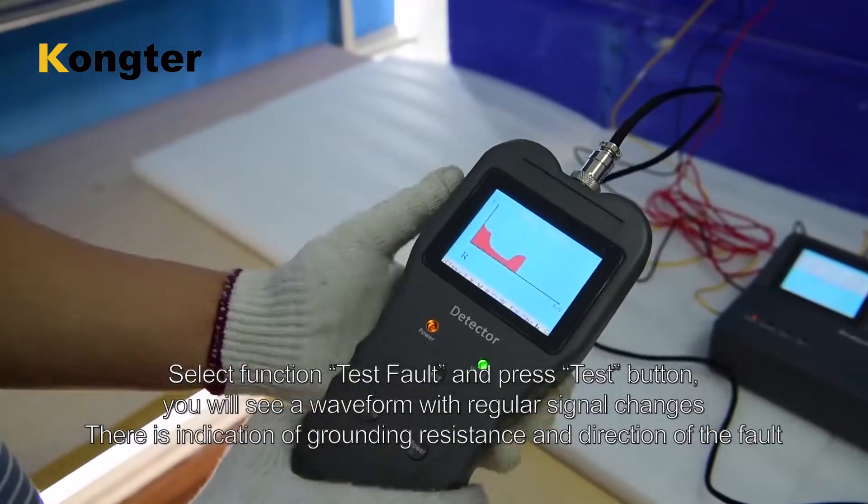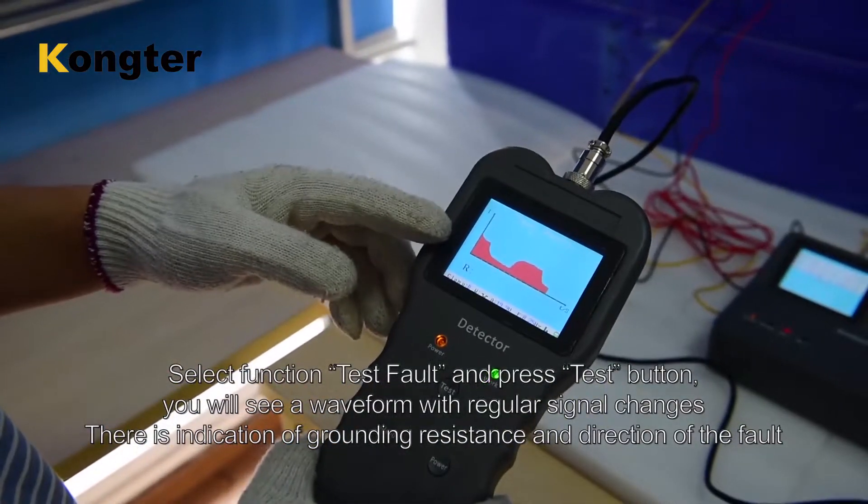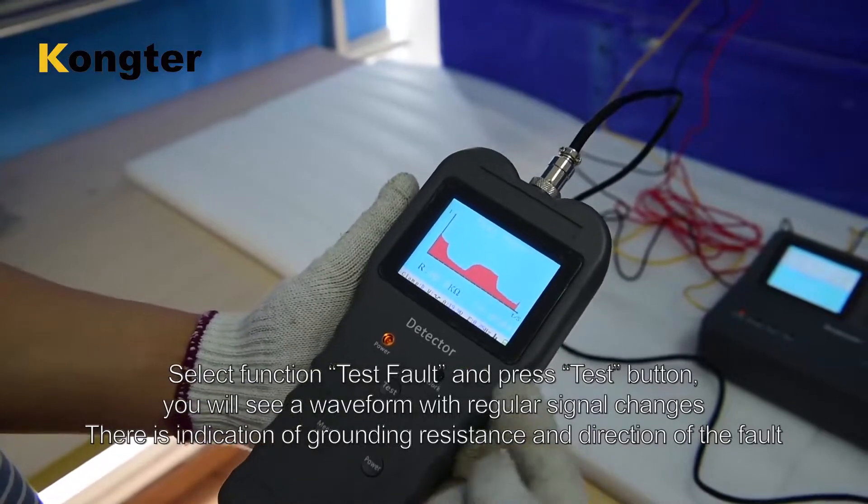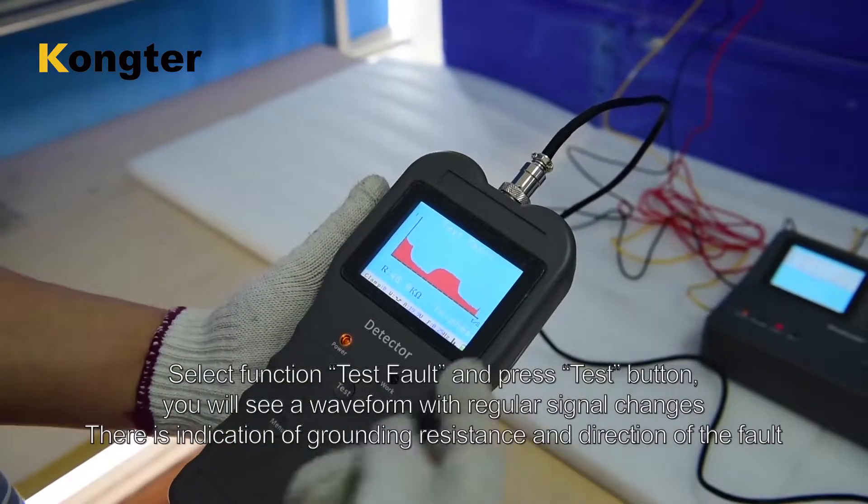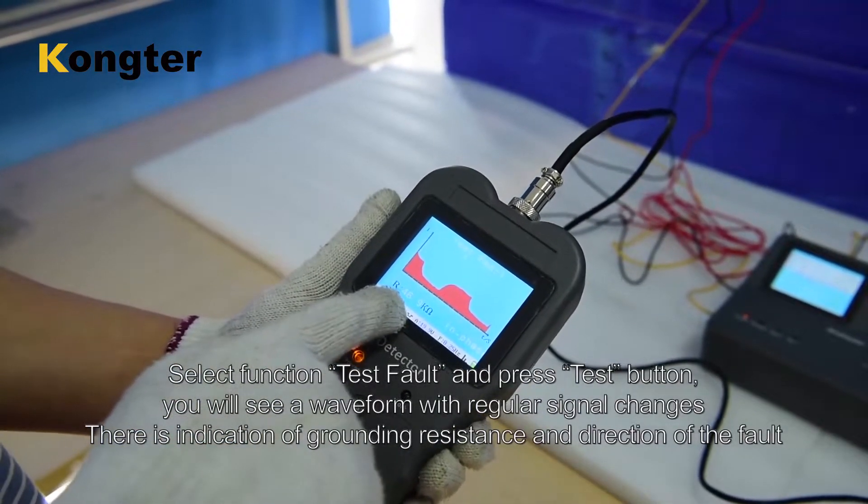Select function test fault and press test button. You will see a waveform with regular signal changes. There is indication of grounding resistance and direction of the fault.